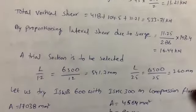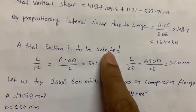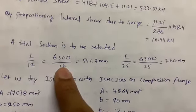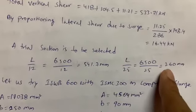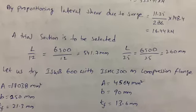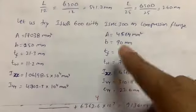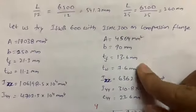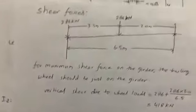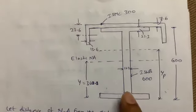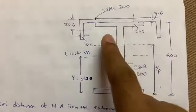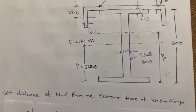To select a trial section, we first check the code conditions: depth ≥ span/12 and ≥ span/25, giving approximately 260 mm minimum. The chosen trial section is ISWB 600 with ISMC 300 on the compression flange. The properties of ISWB 600 and ISMC 300 are taken from the steel tables book.